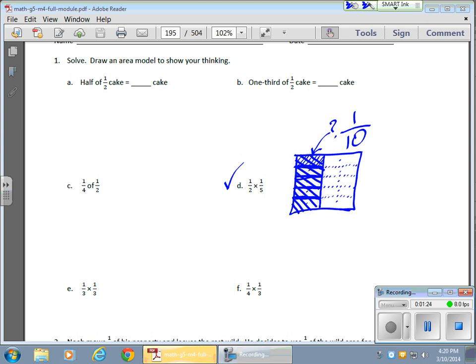So 1 half of 1 fifth, or 1 half groups of a fifth, equals 1 out of 10. Now this would work the other way as well. Let's say I started with the fifth, and I broke my box into my unit, my 1 whole into fifths.